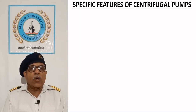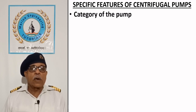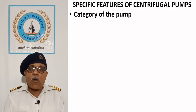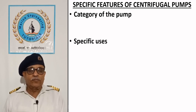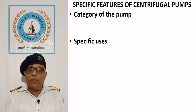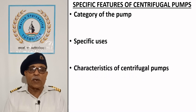Specific features of centrifugal pumps. Category of the pump: centrifugal pumps fall under the category of rotodynamic pumps. Specific uses: centrifugal pumps are used to handle low viscosity liquids. Liquids handled on ships through these pumps may include water, petroleum products and chemicals.